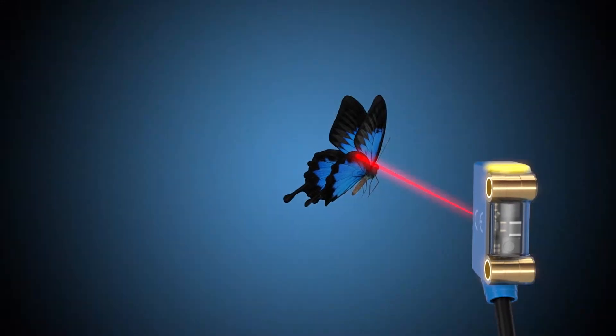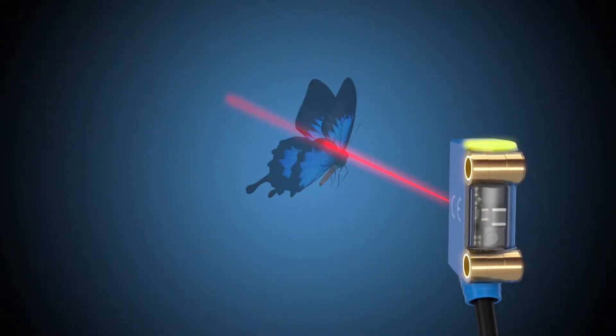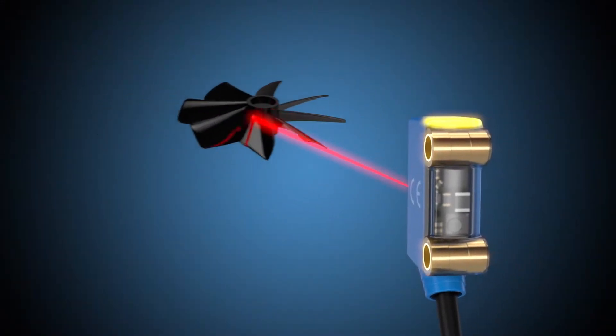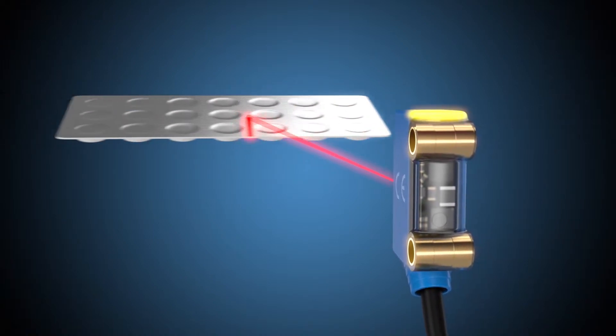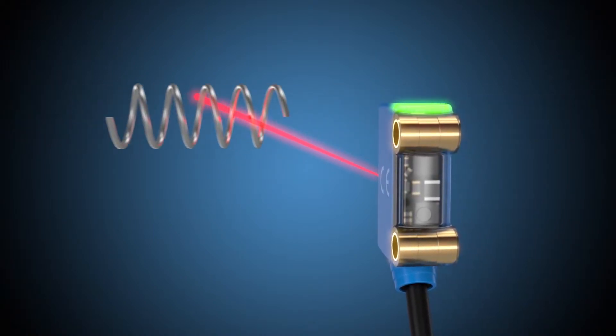Because they detect even the deepest shades of black, enabling them to identify objects of any kind, even if these are reflective or exceptionally thin.